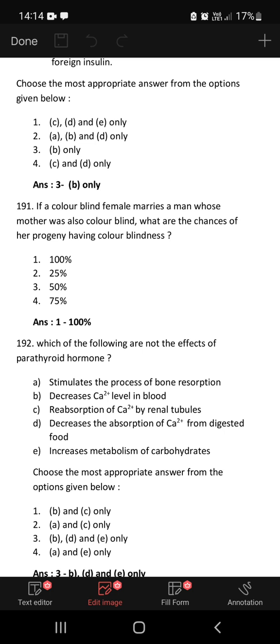If a color blind female marries a man whose mother was also color blind, both of them are color blind. Both the X chromosomes are color blind. All the offspring formed will be having color blindness. So hundred percent color blindness will be there in the progeny, whether it is male or female.